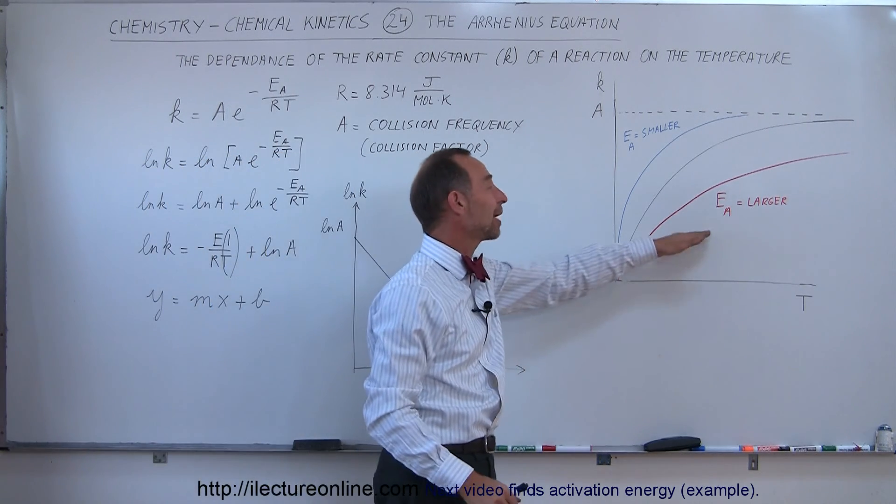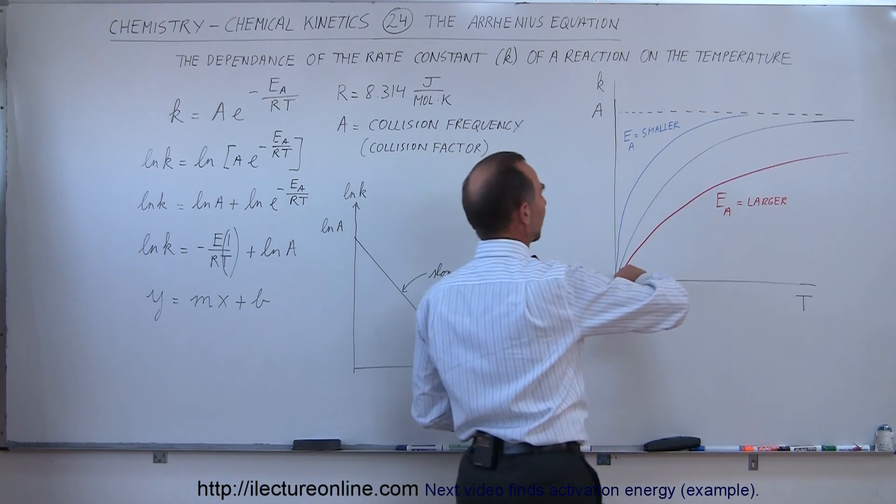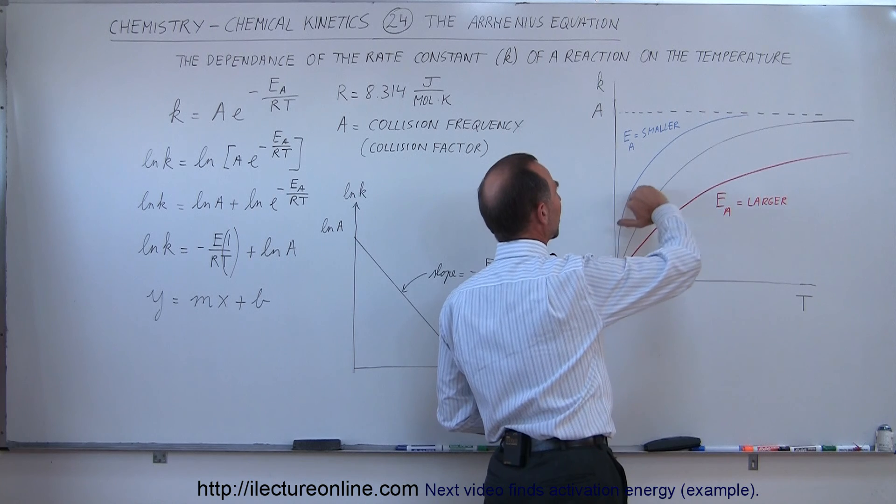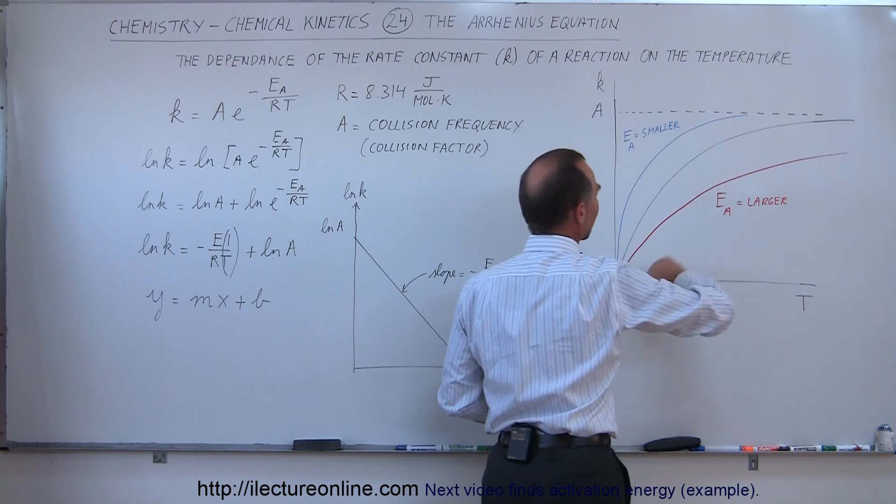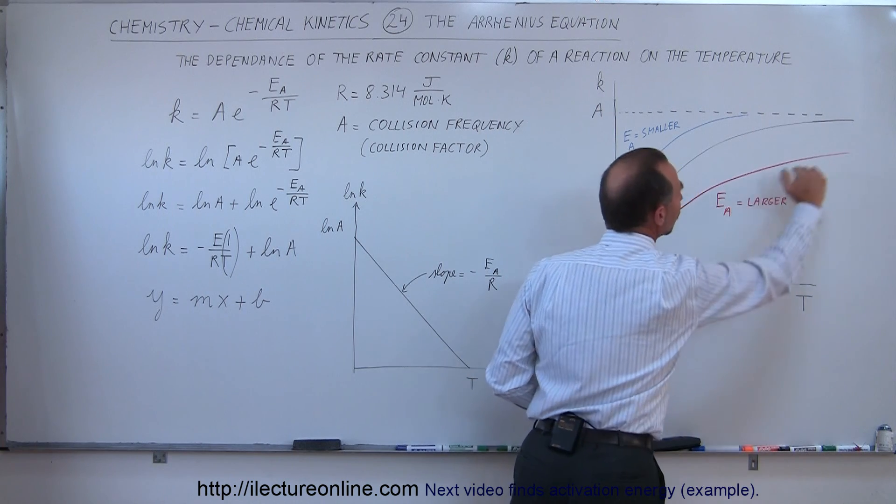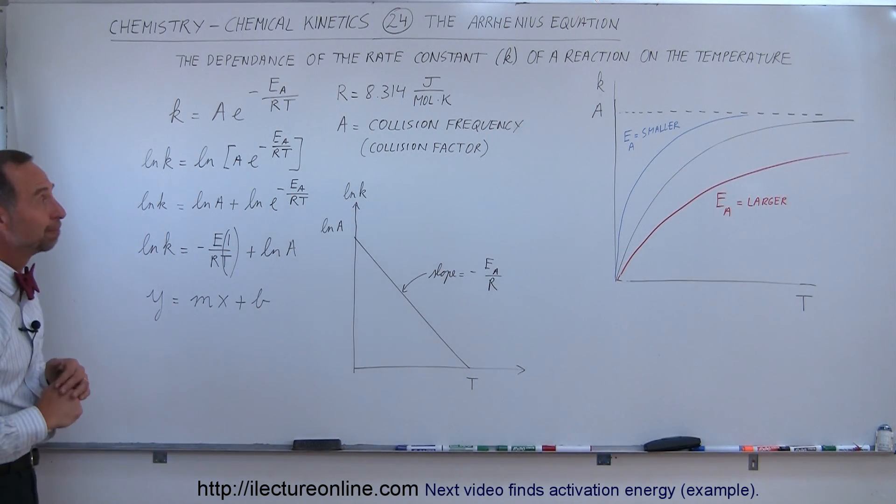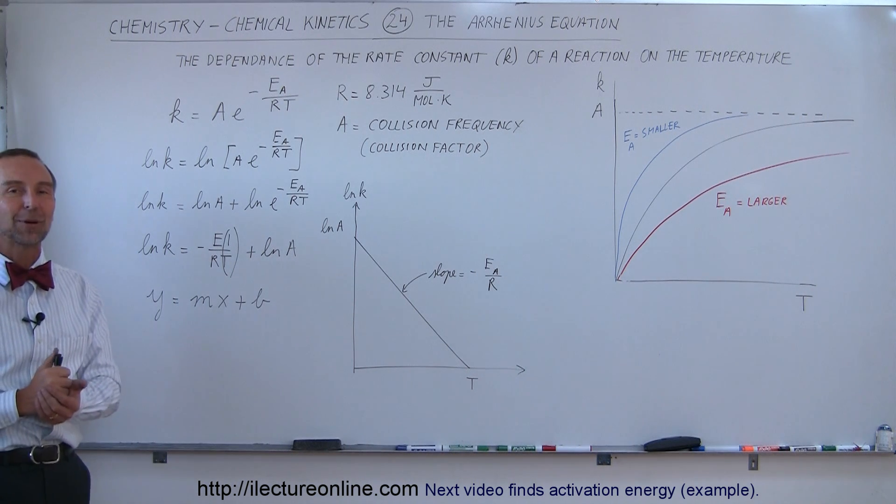I just like this format of the graph better because it really shows that at low activation energies the reaction takes place very quickly, at high activation energies it takes a lot longer, it takes a lot higher temperature to achieve the same reaction rate. So I think that one explains things a whole lot better, and that's the Arrhenius equation.